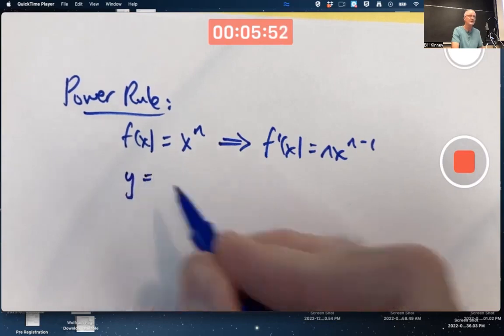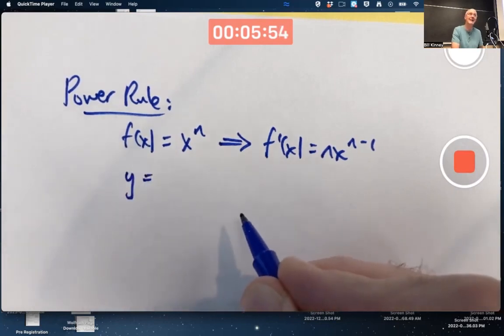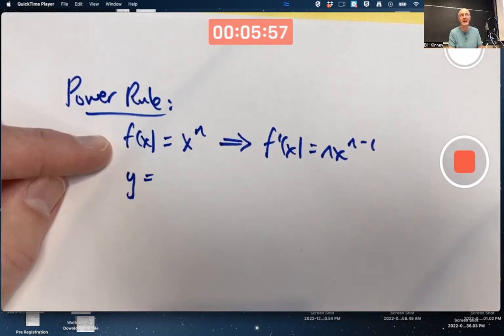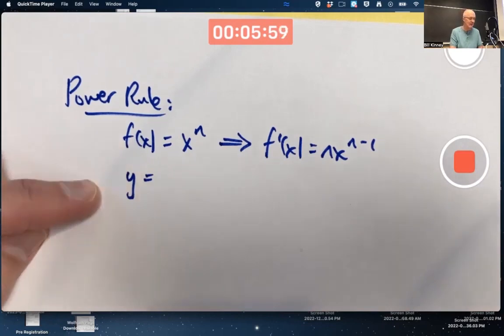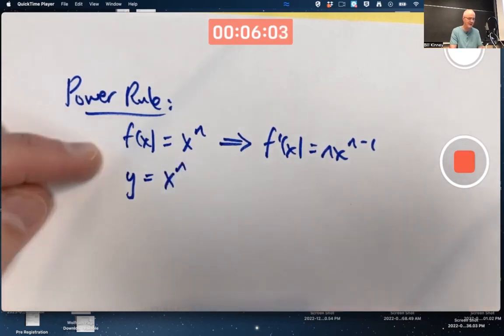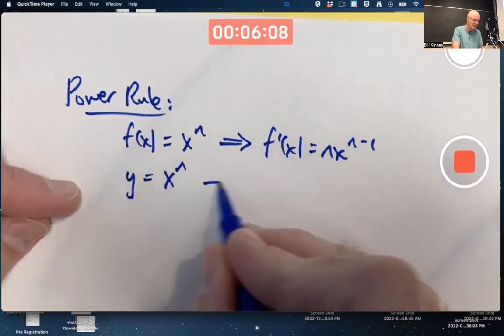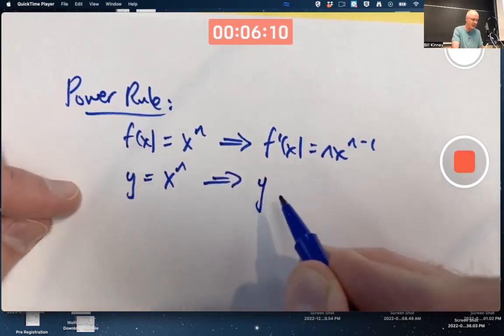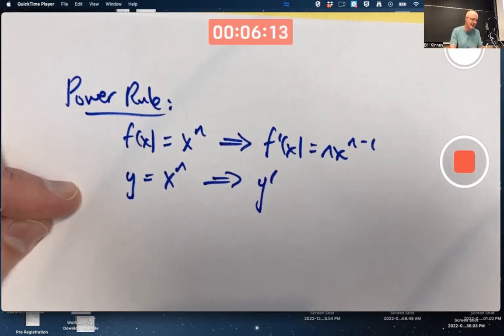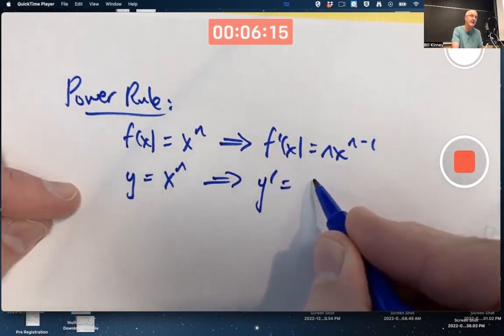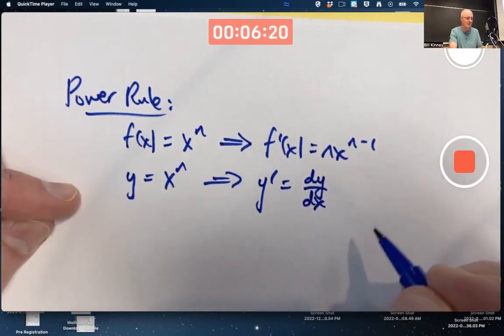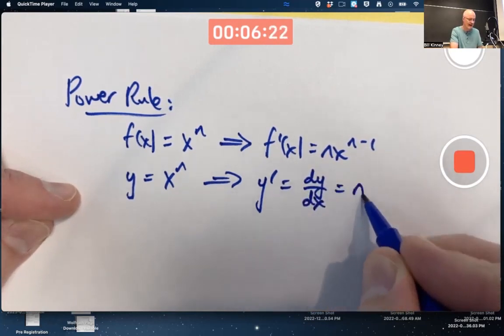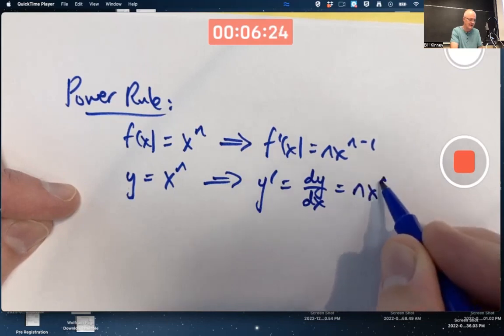If you're using function notation and f(x) = x^n, then f'(x) = n·x^(n-1). That would be using function notation. If you don't use f(x) but use y, so here I'm emphasizing the function name is f, here I'm emphasizing the dependent variable is y = x^n.